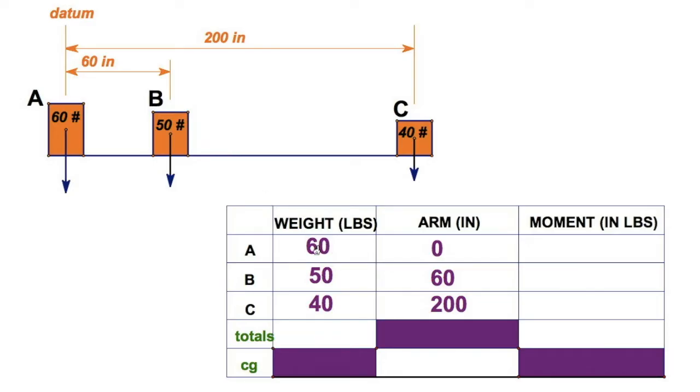We're going to calculate on this table the location of the fulcrum, and then we'll call that the CG, the center of gravity. Let's go through the math. I've got 60 pounds. A is 60 pounds. It is zero inches because it's on the datum. Just a random point I picked, but it still has a moment of zero relative to the datum. Point B is 50 pounds, and it's 60 inches from the datum. Six times five is 30, so you know this would be 3,000. It's 3,000 inch pounds.